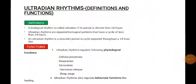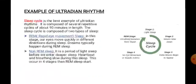Now, what are ultradian rhythms? The period which repeats itself within a 24-hour day is the ultradian rhythm. Ultradian rhythms regulate both physiological and behavioral functions. Physiological functions include cellular processes, respiration, circulation, and sleep state. Ultradian rhythms also regulate behavioral functions like the feeding cycle. A good example of an ultradian rhythm is the sleep cycle.